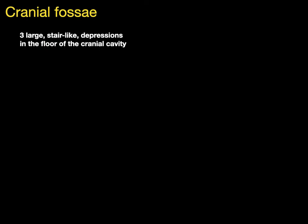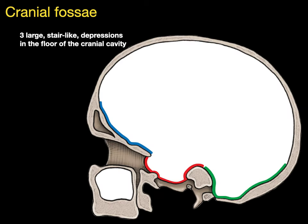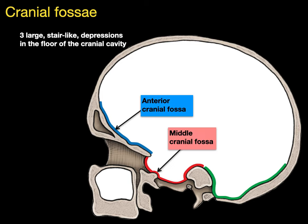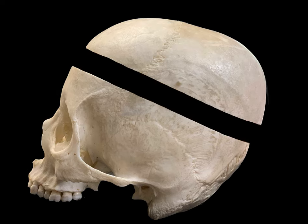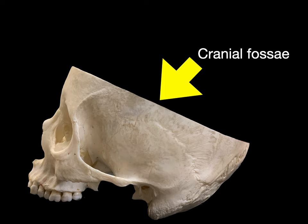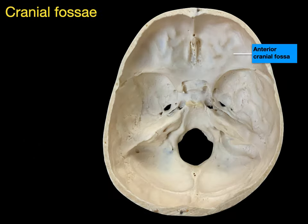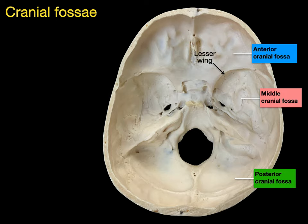Now let's go to cranial fossae — three large stair-like depressions in the floor of the cranial cavity. In a sagittal section from a lateral view, there's the anterior cranial fossa, a step down is the middle cranial fossa, and a step down is the posterior cranial fossa. The lesser wing of the sphenoid bone separates the anterior and middle cranial fossae, and the back of the petrous part of the temporal bone separates the middle and posterior cranial fossae. Removing the calvarium reveals our anterior, middle, and posterior cranial fossae.